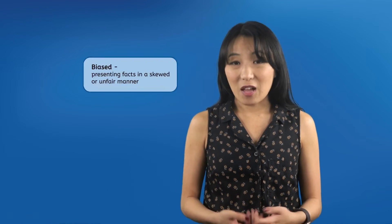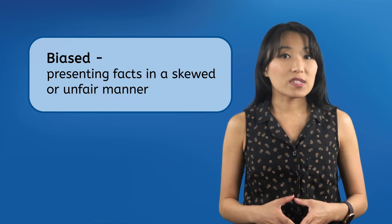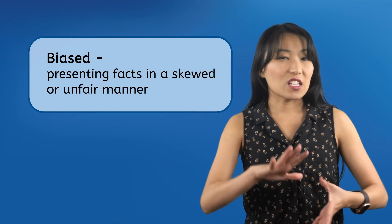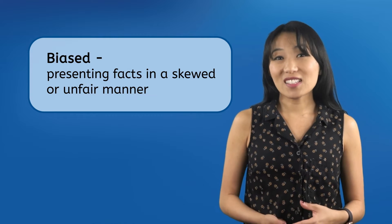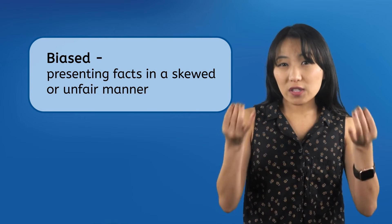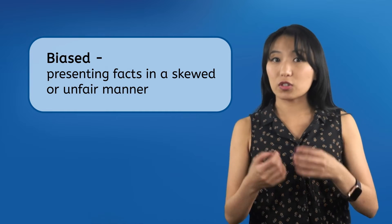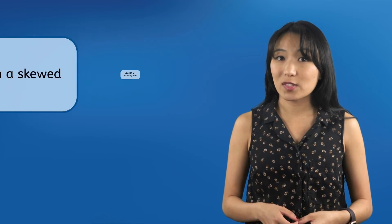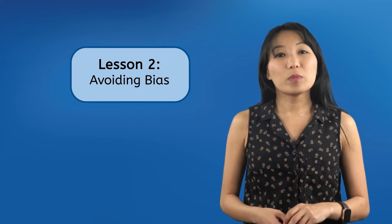Novice researchers also tend to believe everything they find online. They don't realize that much of the information online is biased — presenting facts in a skewed or unfair manner that doesn't allow researchers to fully understand what's going on or come to their own conclusions. The second lesson in this unit will be all about how to detect and avoid bias in the information you find online.